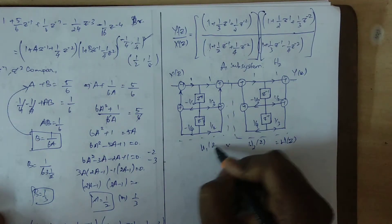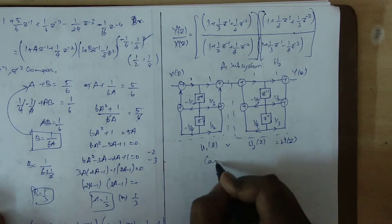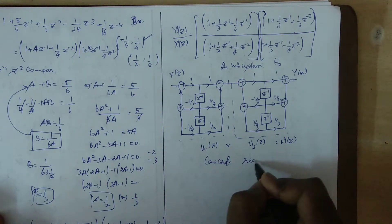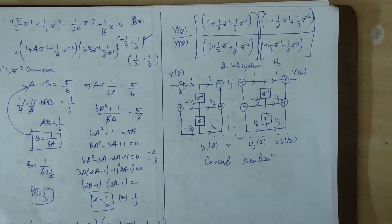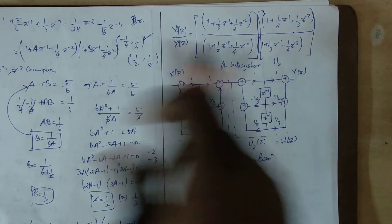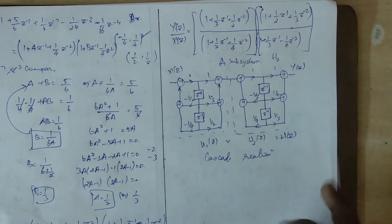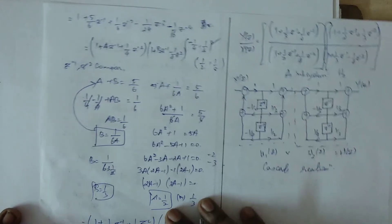So this is the cascade realization — H1 subsystem and H2 subsystem together form the complete cascade realization of H(z).